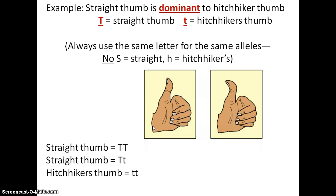If you have hitchhiker's thumb, we know that you have two copies of the recessive allele — homozygous recessive.